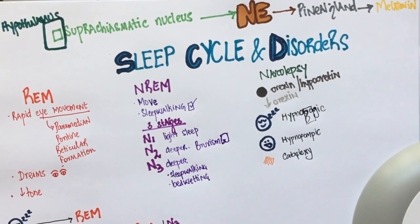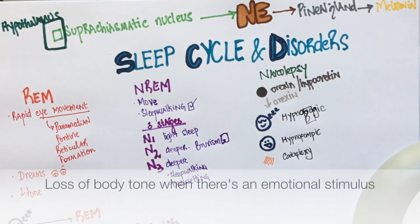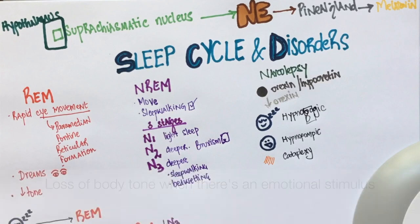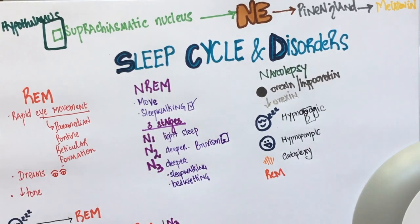Patients with narcolepsy also experience cataplexy, which is a loss of body tone when there is an emotional stimulus. These patients begin their sleep with the REM stage. So REM latency in patients with narcolepsy is also decreased.